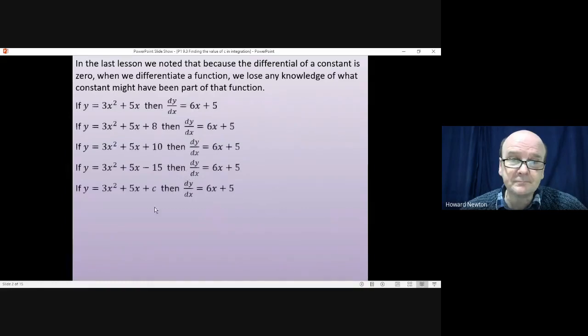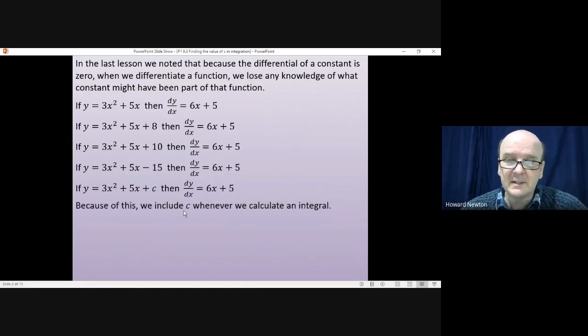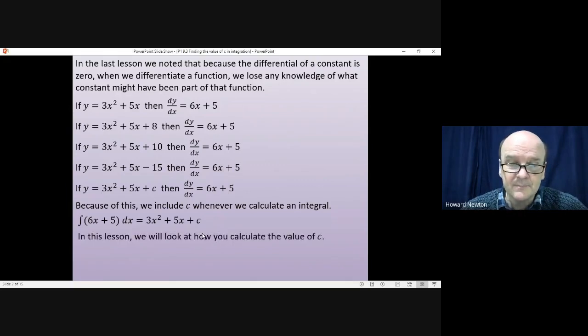So in all of these cases where you've got 3x² + 5x + any number, when you differentiate them you get exactly the same answer. The consequence of that is we include c whenever we calculate an integral. So if we had to integrate 6x + 5 then we get 3x² + 5x plus some constant and we don't know what that constant is, but in this lesson we'll be looking at how you can calculate what it is.